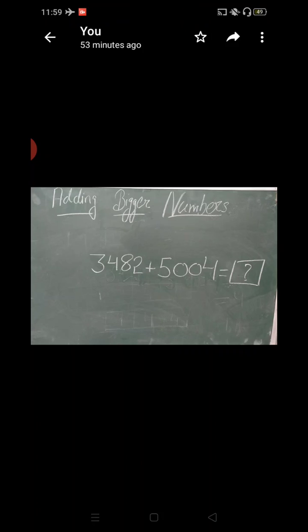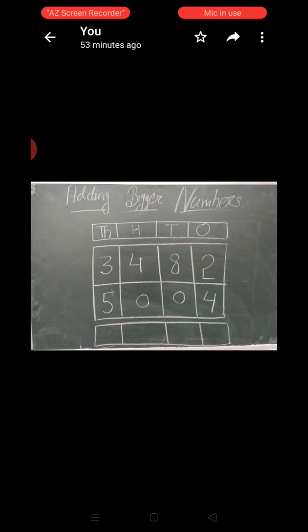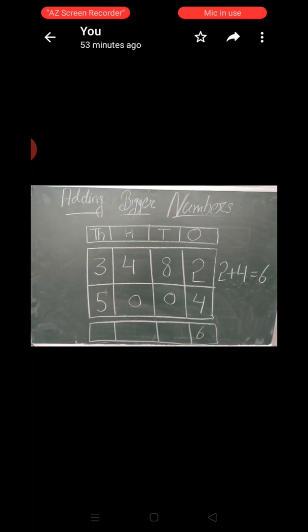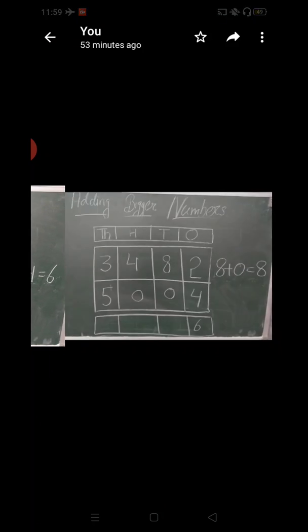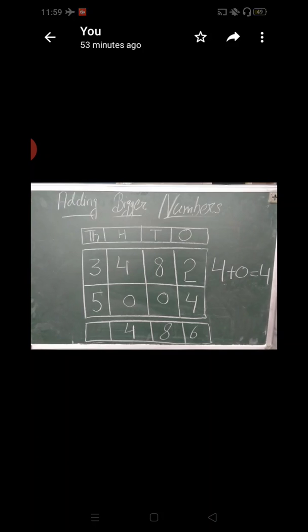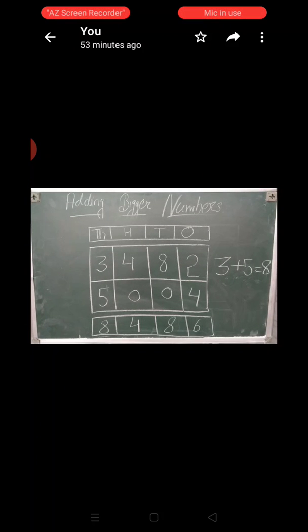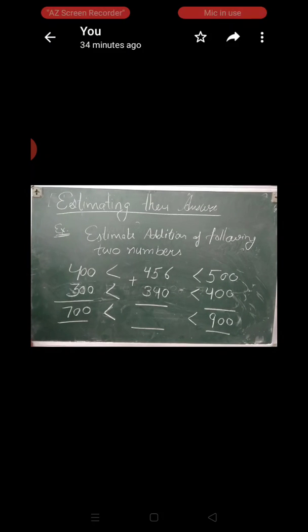Now we are doing addition of bigger numbers. We have two numbers: 3,482 and 5,004. In the first step, we add 2 plus 4 equals to 6. In the next step, we add 8 plus 0 equals to 8. In the third step, we add 4 plus 0 equals to 4. And in the last step, we add 3 plus 5 equals to 8. I hope you got it.